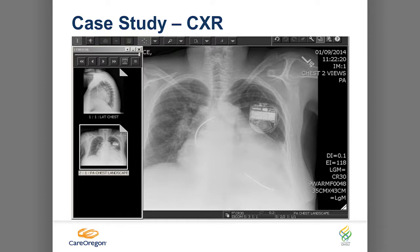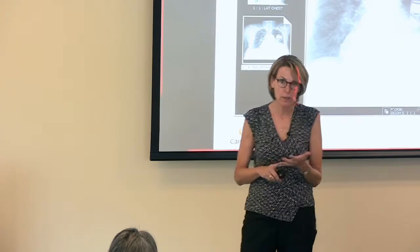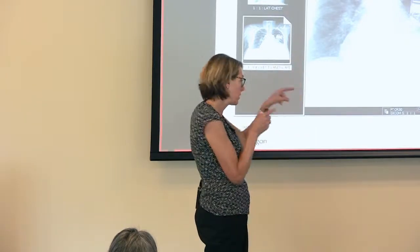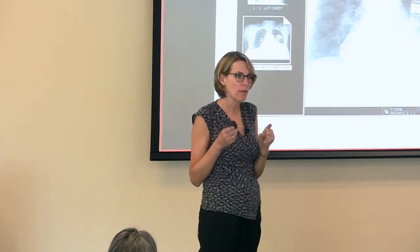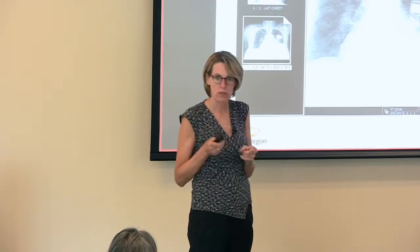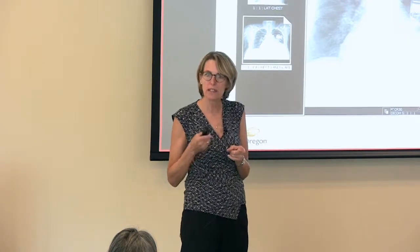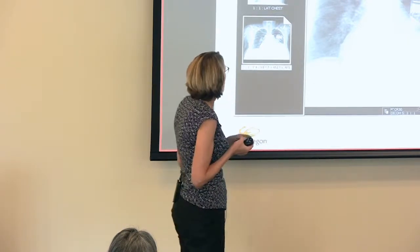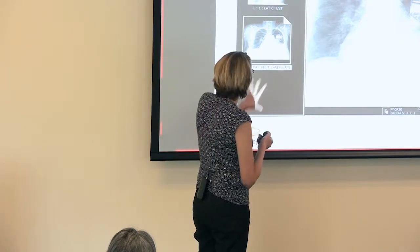This is her chest X-ray. Her heart's a little large. I can see this patient has an ICD because of that lead. Remember, all that's going to do is not make her heart failure better — it's not a BiV, there are not two leads, one on either side. It's only going to shock her. If she has VT, it's going to shock her. And she's also got fluid.